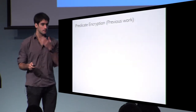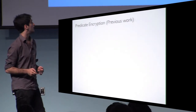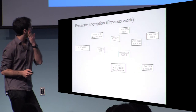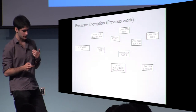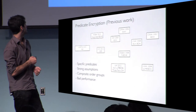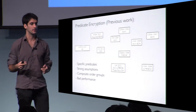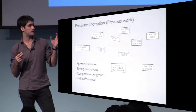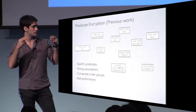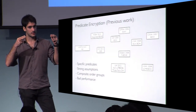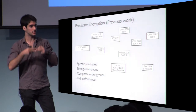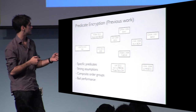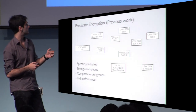There have been many works in this area — I am showing just some of them — but usually all of them fall into one of these problems. Some are for very specific predicates, for example the inner product, where X and Y are thought of as vectors and the predicate checks whether their inner product equals zero. Some works are for very specific predicates like inner product or Boolean formulas.